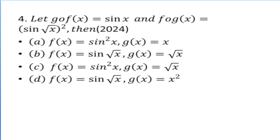The next question gives two composite functions: g∘f equals sin x, and f∘g equals (sin√x)². We need to identify the functions f and g. In f∘g, the angle is √x and the power is 2, so we need options containing both a square and √x. Option A has sin²x — power is there but √x is not, so it can be eliminated. Option B has sin√x but the whole square is missing, so it can also be eliminated directly.